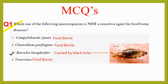The first MCQ is about which microorganism is not a causative agent for foodborne diseases. Whenever attempting these questions, first circle the word 'not.' Option three is the right answer, whereas Campylobacter jejuni, Clostridium perfringens, and Norovirus are all foodborne diseases. Norovirus is a very problematic foodborne virus in the United States. Option three — Borrelia burgdorferi — is caused by the biting of black ticks, and I have put a photo of black ticks here for your future reference. The correct answer is option three.